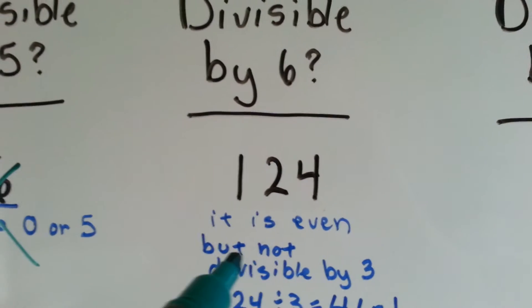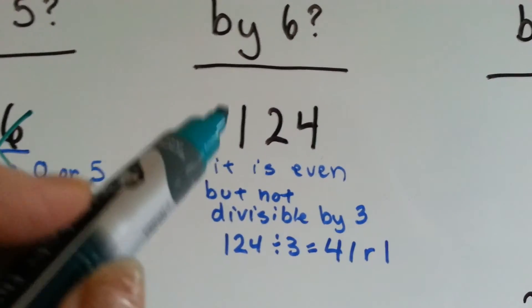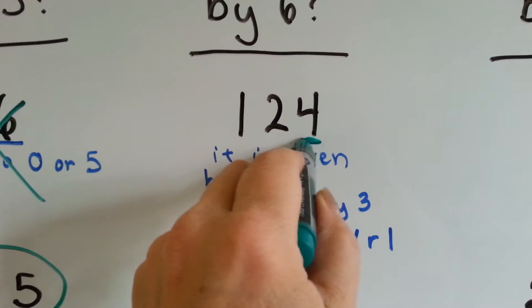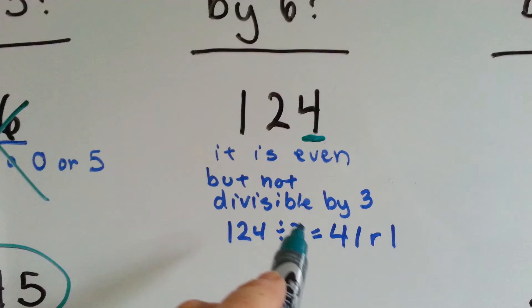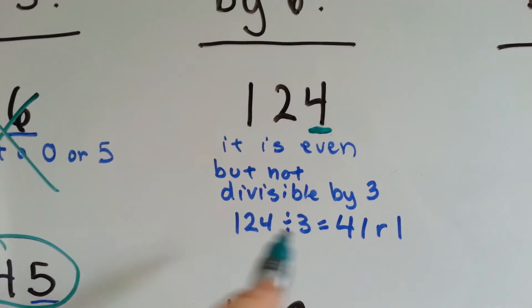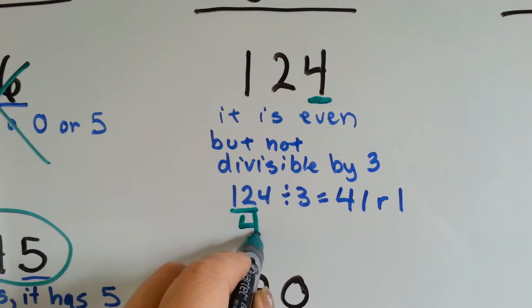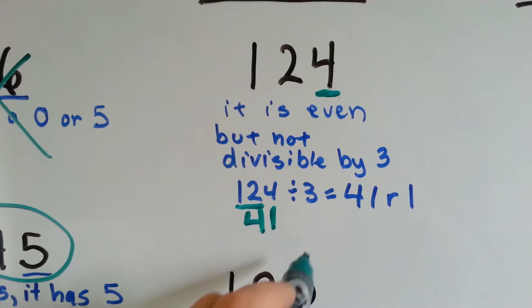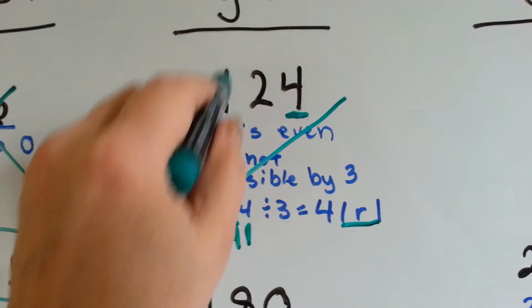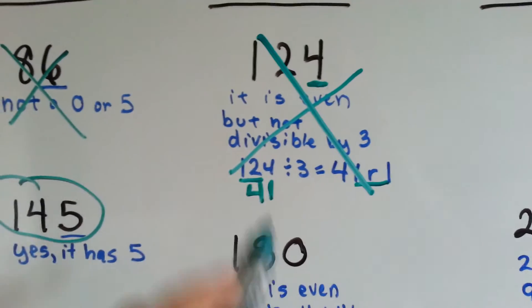Divisible by 6: the rule says it's got to be even and you have to be able to divide it by 3 — both of those. 124: well, it's an even number — it ends in a 4. But 124 divided by 3 is 41 remainder 1. How many times can 3 fit into 12? 4. How many times can it fit into 4? 1. But we got 1 left over, so it's got a remainder of 1. So no, 124 is not divisible by 6 because it's not divisible by 3.